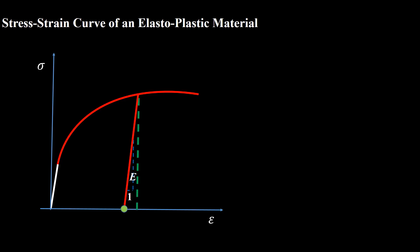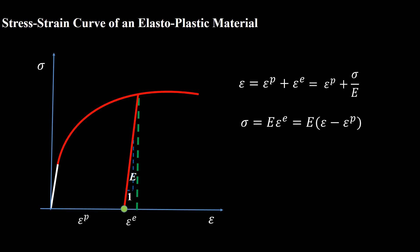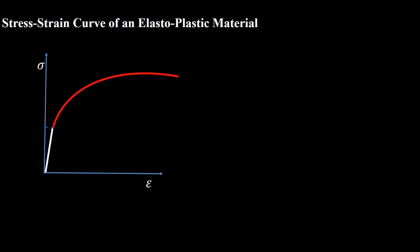In the plastic region, the unloading path occurs with the same slope as the elastic region, but in this case a part of the strain is recovered and a part is permanent. The permanent part is known as plastic strain, and the recovered part is known as elastic strain. The total strain is the summation of these two. Considering the unloading slope E, we can write the elastic strain based on stress and E. Writing stress as a function of plastic and elastic strain is more useful, and this formula is used in plasticity extensively.